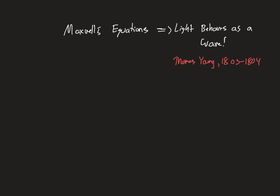Maxwell's equations is the theory behind why light behaves as a wave, and Maxwell was around in the 1860s. So we are talking about very historical physics here, but these are the two reasons why we believe light behaves as a wave: through the experiments and also through the theory. I'm going to quickly go through the theory of why we can use Maxwell's equations and the equations of electromagnetism to predict that light should actually be a wave.